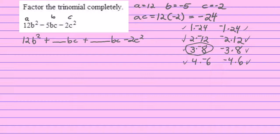So these are the numbers I'm going to use. So I'll have 12b² minus 8bc plus 3bc minus 2c².